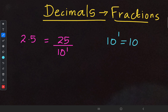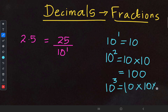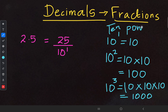10 to the power of 1 means 10. 10 to the power of 2 means 10 multiplied by 10, which gives you 100. 10 to the power of 3 means 10 into 10 into 10, which gives you 1000. You have to be familiar with these powers of 10: 10 to the power of 1 is 1 with one zero, 10 to the power of 2 is 1 with two zeros, 10 to the power of 3 is 1 with three zeros.